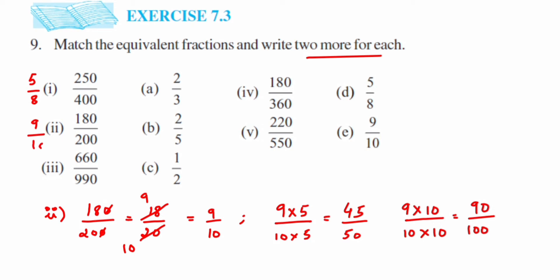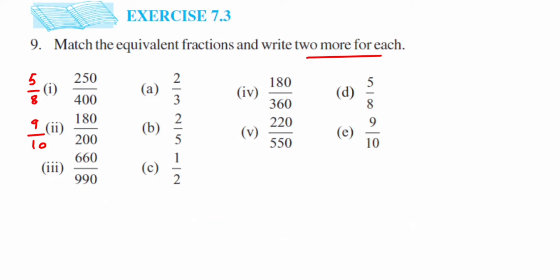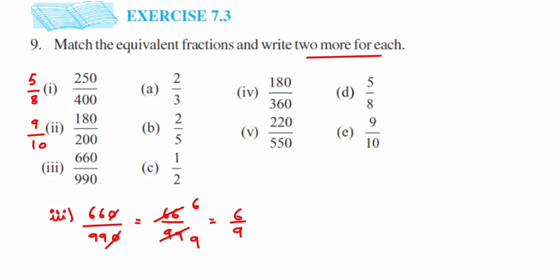Next question is 660 upon 990. We have a zero at the end so we cancel the zeros, getting 66 upon 99. This number is divisible by 11: 11 sixes are 66 and 11 nines are 99, giving 6/9. And 6 and 9 are divisible by 3: 3 twos are 6 and 3 threes are 9, so the reduced form is 2 upon 3.